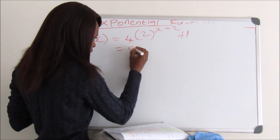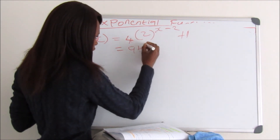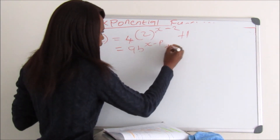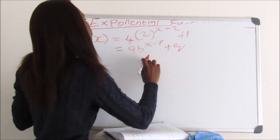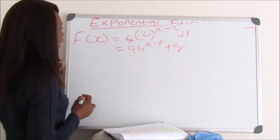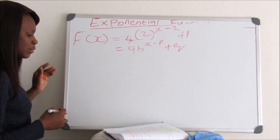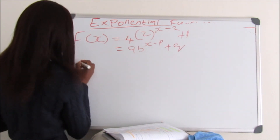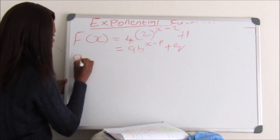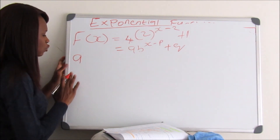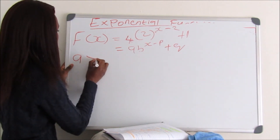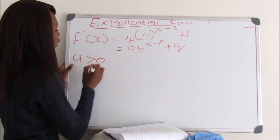So this is our standard equation for exponential functions: AB to the exponent of X minus P plus Q. The first thing we must do is look at A — if A is greater than 0, then we know our graph will lie above the asymptote.